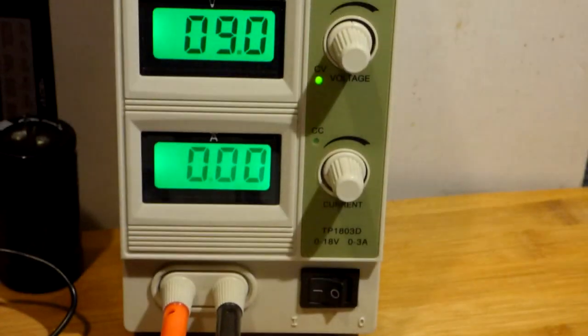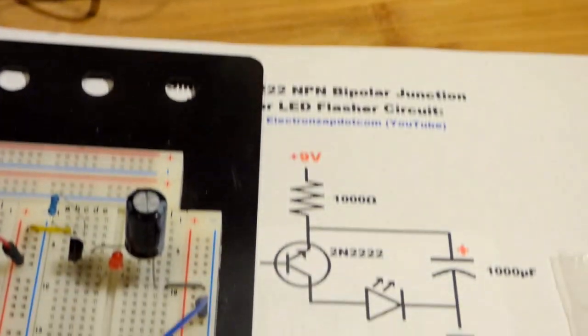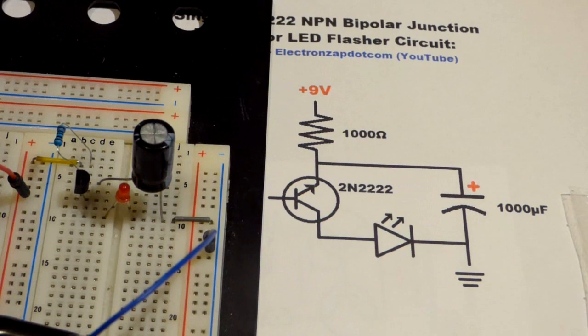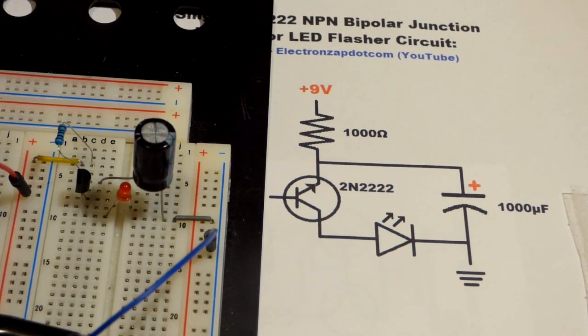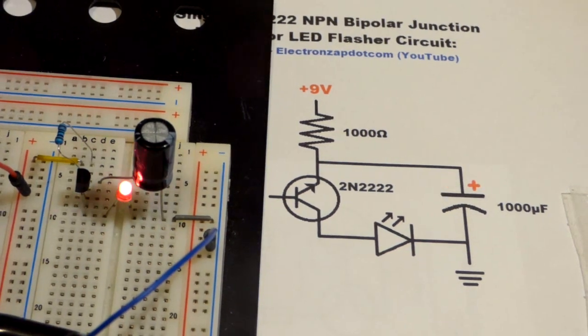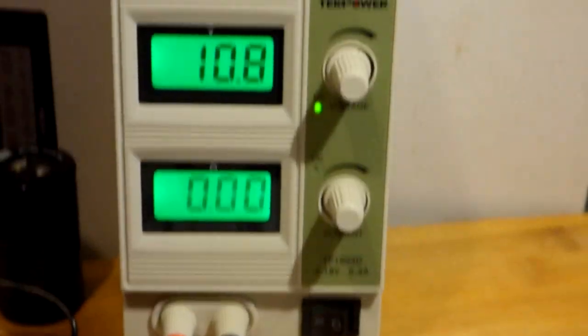Right now we are working with 9 volts as you can see there. If I turn up the voltage, let's turn it up to 10, you can see it's flashing faster, and 11 volts, it's flashing even faster. Let's look at that quick.